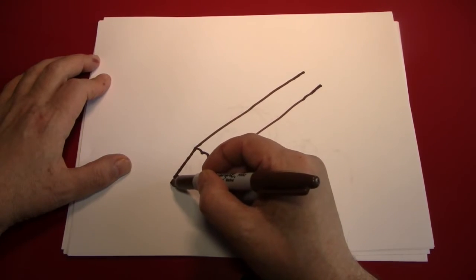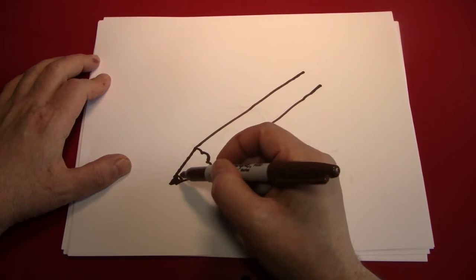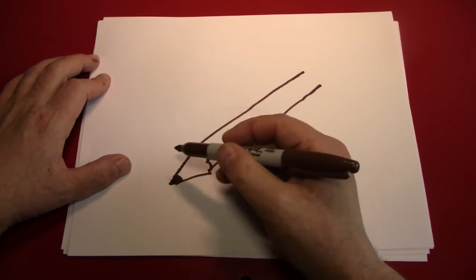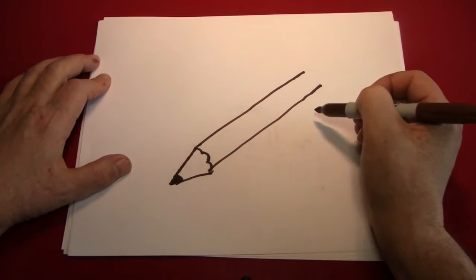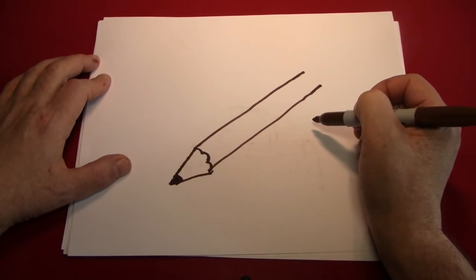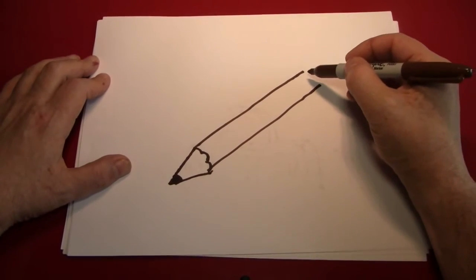If we're going to be drawing a pencil, we're going to need lead or graphite, which is what's actually in pencils. There we go. A little point right there, and it's starting to look more pencil-y already.